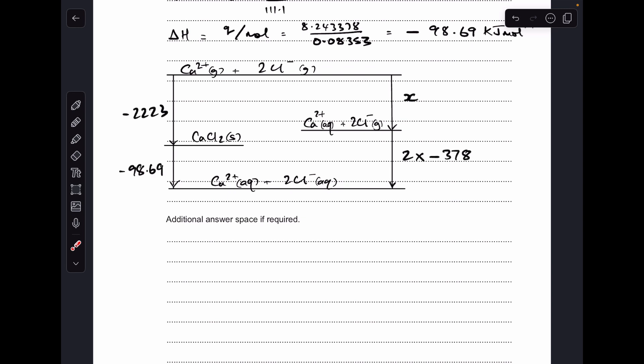So I'll just put the numbers in the cycle and then talk through the calculation. There's the numbers in there. I'm just saying x for the one we're trying to calculate, the enthalpy change of hydration for calcium 2 plus. And don't forget you have to double this one here because there's two moles of chloride ions in the cycle.